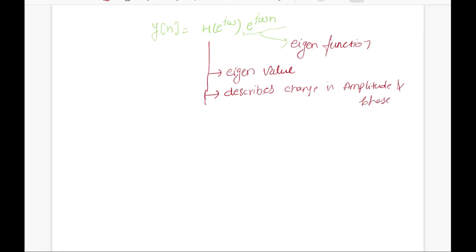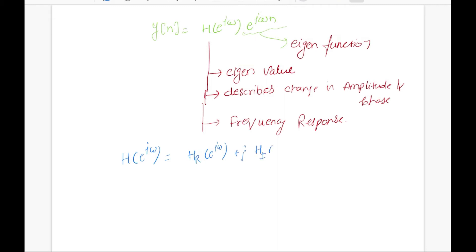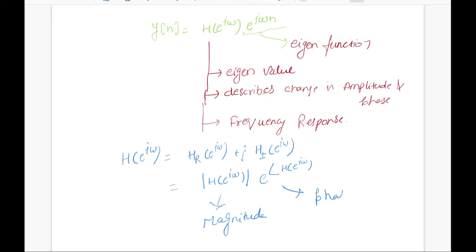H(e^(jω)) is the frequency response of the system. In general, the frequency response is a complex number which can be broken into its real part and imaginary part, or alternatively written as a magnitude response and a phase response.